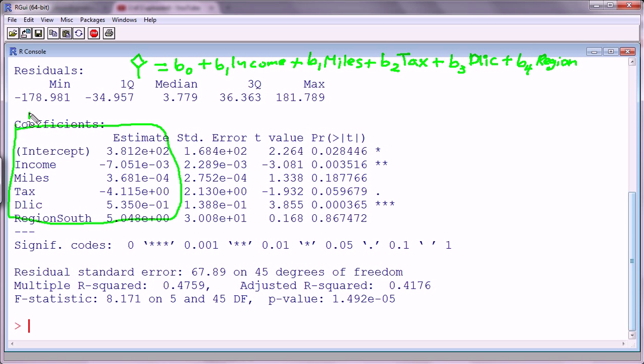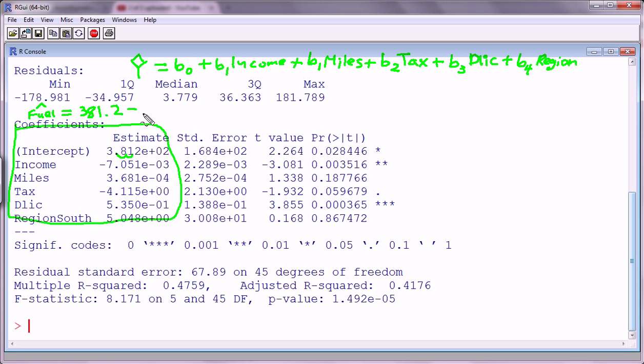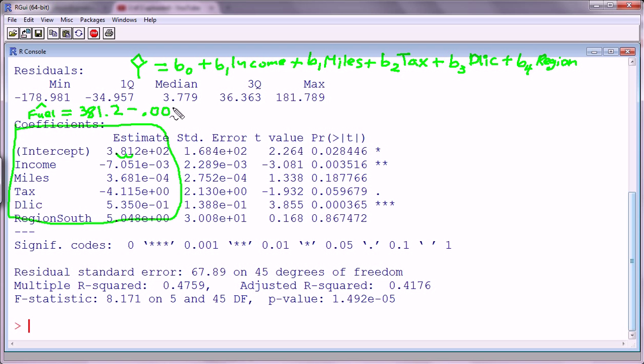So instead of Y, I have fuel. So here's fuel hat equals, what's B0? Well it's 3.812 times 10 to the second. So it's actually, I have to take this two decimal places this way. So it's 381.2. That's B0 plus, what's B1? Negative 7.051 times 10 to the negative third. That means I have to take this three to the left. So one, two, three. So this becomes minus,